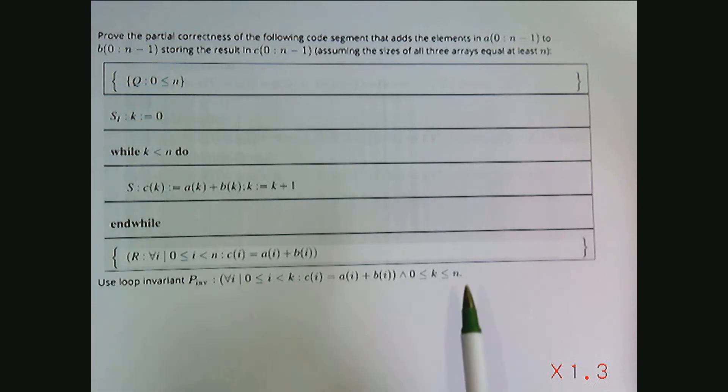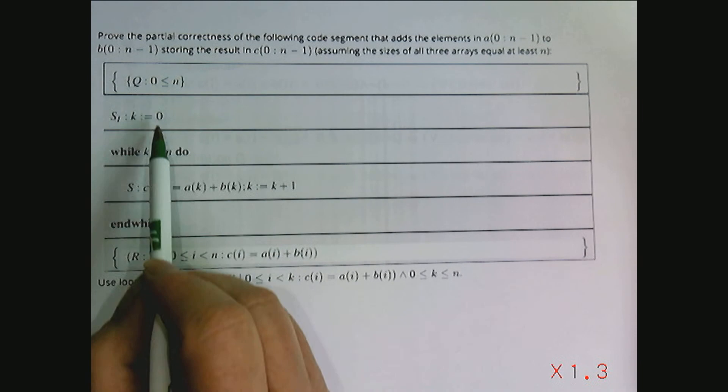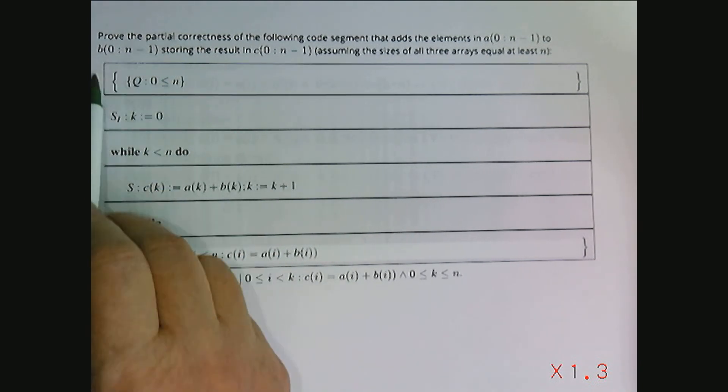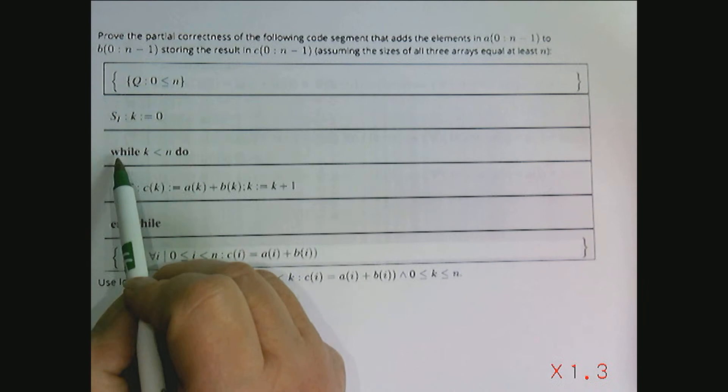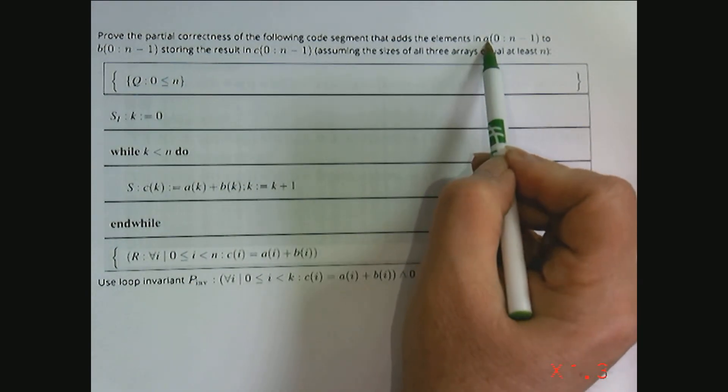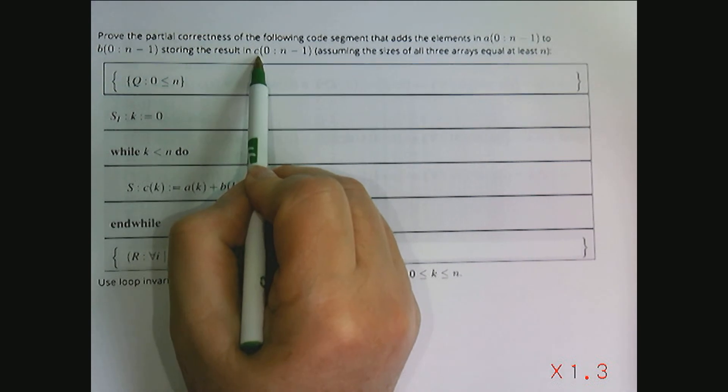In this video, what I'd like to do is to summarize all of the steps we would need to show in order to show partial correctness of this while loop that adds the contents of vectors A and B and stores that result in C.